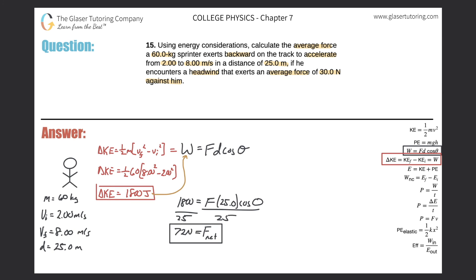Don't conclude that 72 N is the final answer yet — we need to think about what it represents. Let's draw a free body diagram. He is experiencing acceleration to the right. Since this is the net force, we can say the sum of forces equals mass times acceleration: 72 = 60 × a, so a = 72 ÷ 60 = 1.2 meters per second squared to the right.